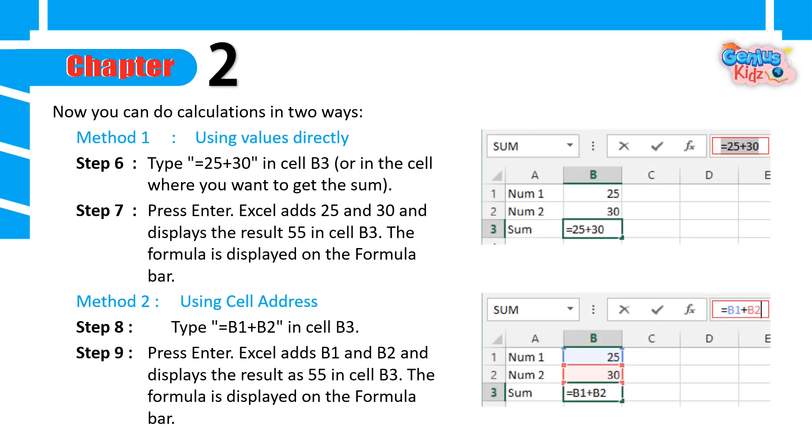Now you can do calculations in two ways. Method 1: Using values directly. Step 6: Type equals 25 plus 30 in cell B3 or in the cell where you want to get the sum. Step 7: Press Enter. Excel adds 25 and 30 and displays the result 55 in cell B3. The formula is displayed on the formula bar.